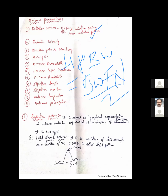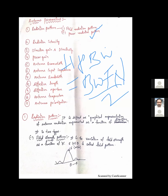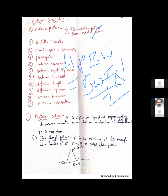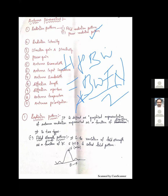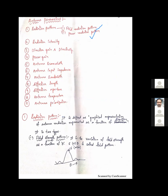BWFN is also defined as angular width which is twice the half power beam width. So BWFN can be written as 2 × HPBW.